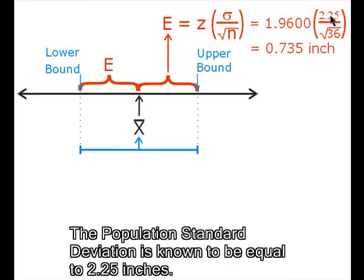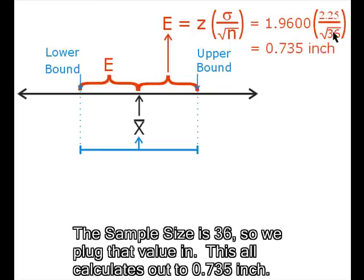The population standard deviation is known to be equal to 2.25. The sample size is 36 so we plug that value in. This all calculates out to be 0.735 of an inch.